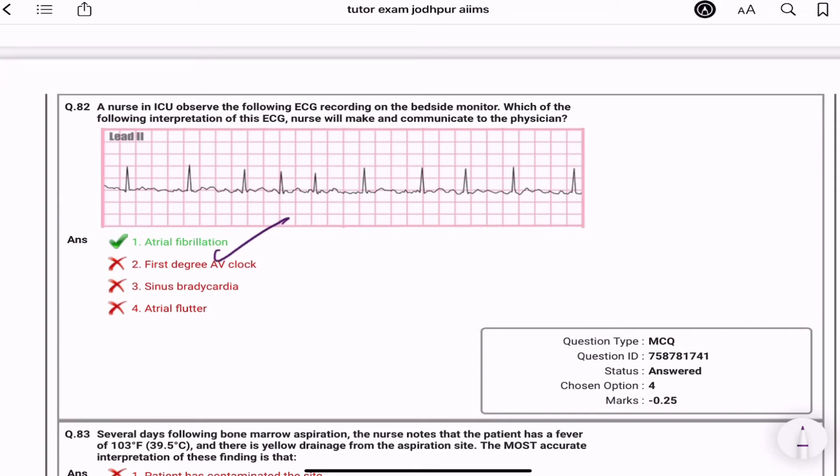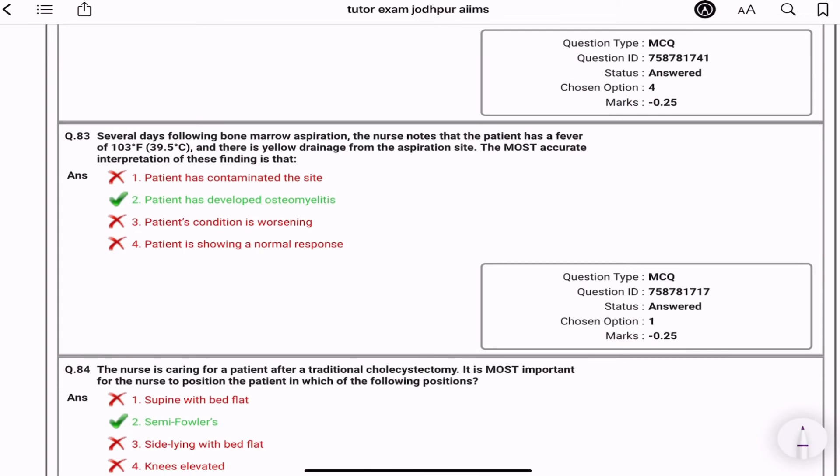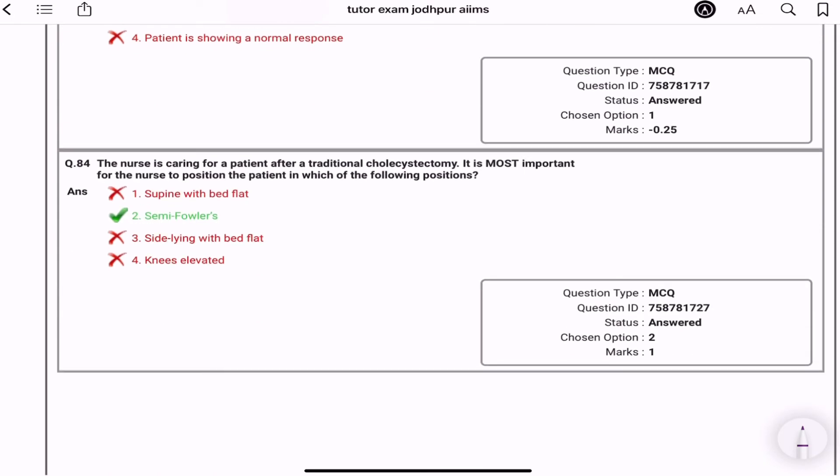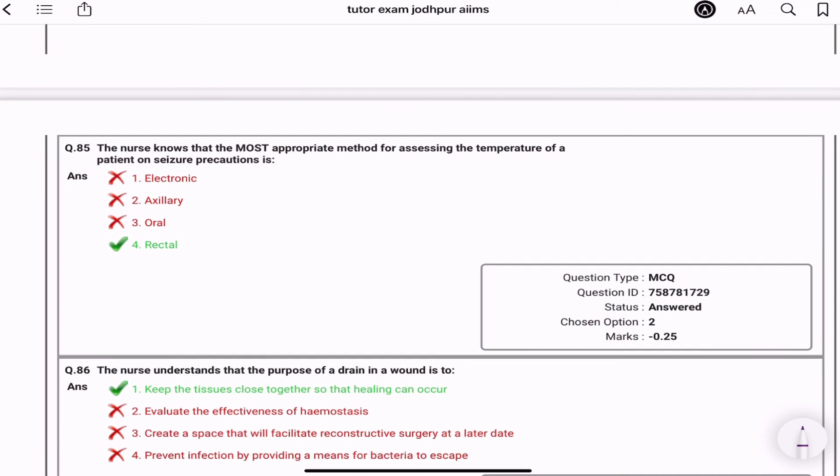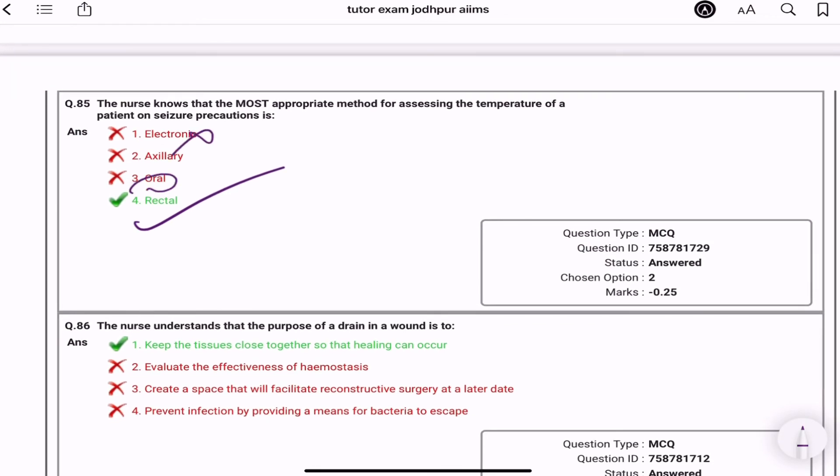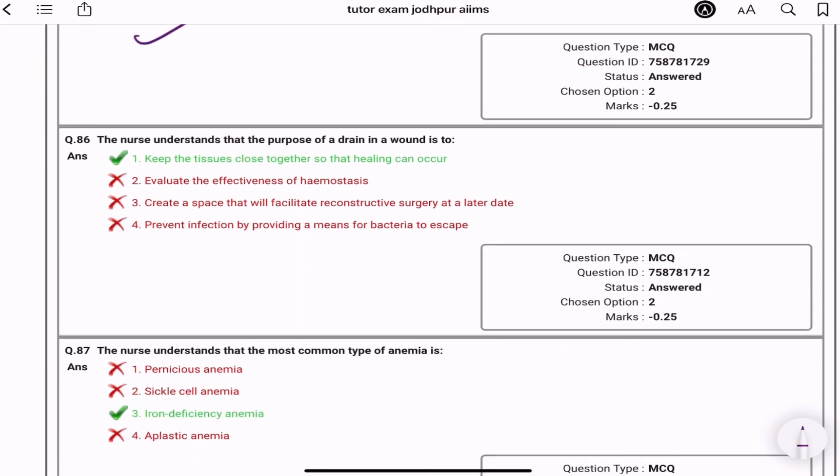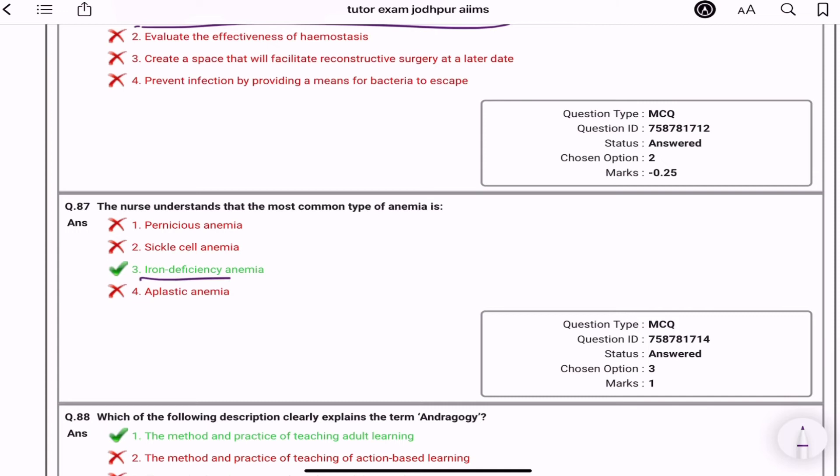Ye aapko graph diya tha to batana tha kya hai. This is atrial fibrillation. Then several days following the bone marrow aspiration, the nurse knows the patient has a fever 103 degree Fahrenheit and there is a yellow drainage aspiration at the site. Yellow drainage hai, infection hai, fever hai. The most accurate, the patient ko kya ho gaya hoga? Infection to osteomyelitis. Bone marrow aspiration ho hai to obviously bone hai to osteomyelitis. The nurse is caring for a patient after traditional cholecystectomy. It is most important for a nurse to position in which of the following? Semi-Fowler's position. The nurse knows the most appropriate method for assessing the temperature of patient on a seizure precaution is rectal. Kyunki seizure aapne oral liya to toot jayega na. Electronic mein bhi aapne le sakte ho, axillary mein aapka correct nahi aayega to rectal.